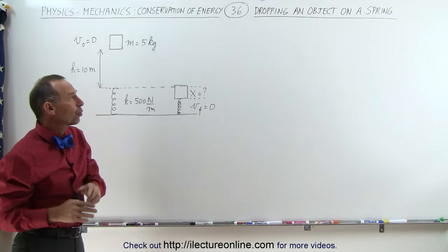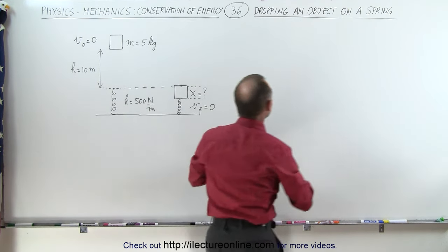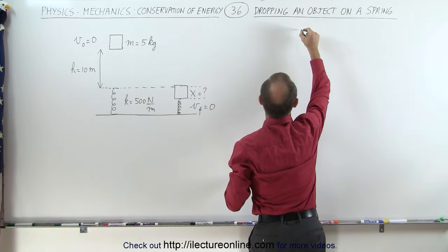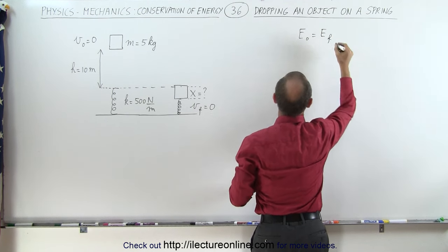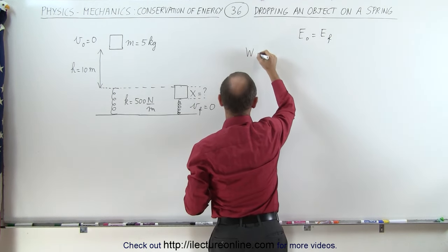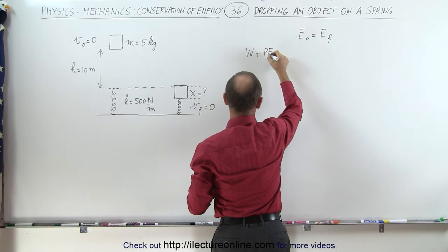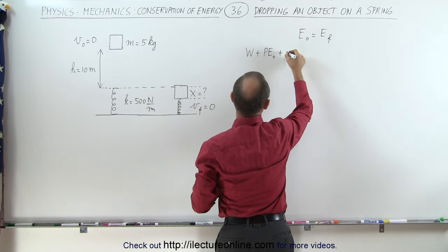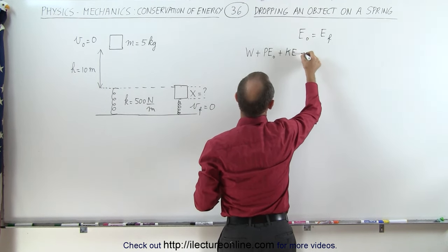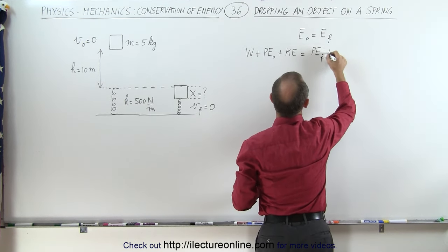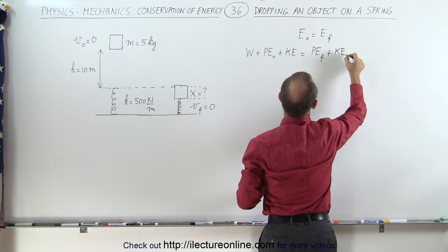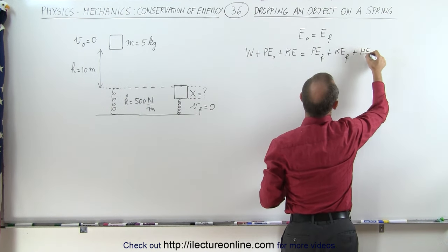Here the energy equation is perfect for a problem like this. We can say that the energy initial equals the energy final, which means that any work put into the system plus any initial potential energy plus any initial kinetic energy must add up to the final potential energy plus final kinetic energy plus any heat lost due to friction.